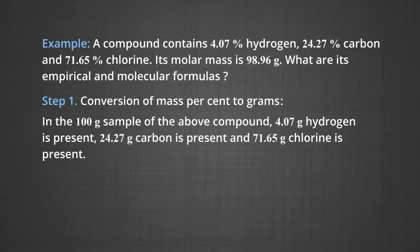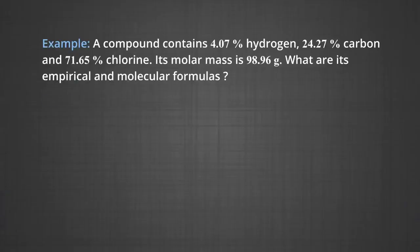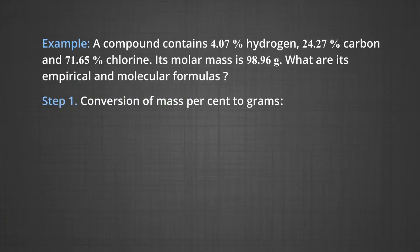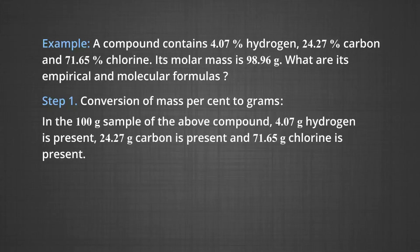Example: a compound contains 4.07% hydrogen, 24.27% carbon, and 71.65% chlorine, with a molar mass of 98.96 g. What are its empirical and molecular formulas? Step 1 — conversion of mass percent to grams: using 100 g of the compound as the starting material, we have 4.07 g hydrogen, 24.27 g carbon, and 71.65 g chlorine.